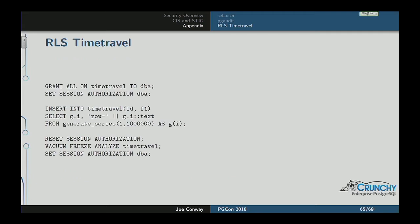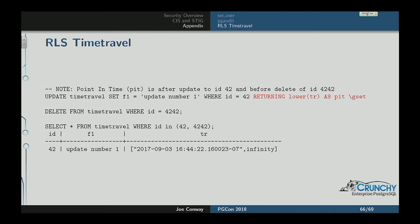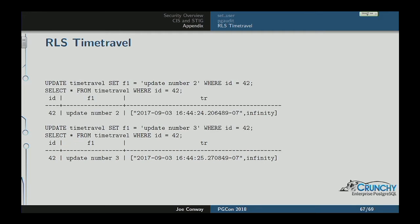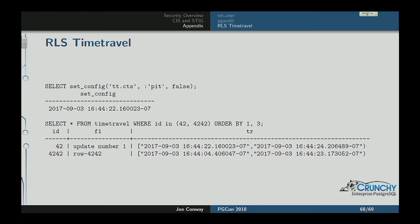I generate some data so we can see how it works. In the first update statement, I change a value where ID equals 42 and capture the timestamp into a PSQL variable called point_in_time. I then delete another row. When I query, I only see the rows I expect based on the current time. After a couple more updates, when I set the config variable to that earlier point in time — before I deleted row 4242 — I see the original update number one instead of update number three, and I see row 4242, as if I had gone back in time.